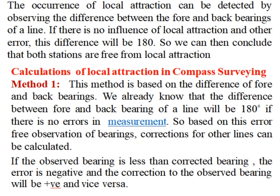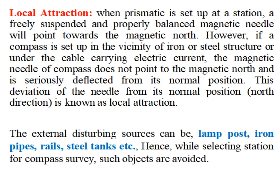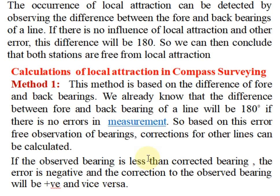Method 1 for calculation of local attraction: first check the difference between fore bearing and back bearing of each line. We know the difference should be 180 degrees. If there is no error, there is no local attraction; if there is error, there is local attraction. Based on this error, the correction for other line observations can be calculated. If the observed bearing is less than the corrected bearing, the error is negative and the correction is positive, and vice versa.